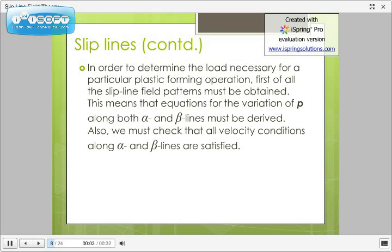Now, we look at the load necessary for a particular plastic forming operation. In order to determine the load necessary for a particular plastic forming operation, first of all, the slip line field patterns must be obtained. This means that the equations for the variation of P along both the alpha and beta lines must be derived. Also, we must check that all plastic conditions along alpha and beta lines are satisfied. Here, we require the magnitude of P, that is the hydrostatic pressure, and the direction of K, that is the pure shear strength, to determine the load necessary for a particular plastic forming operation.